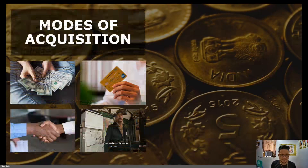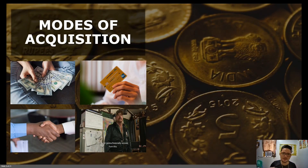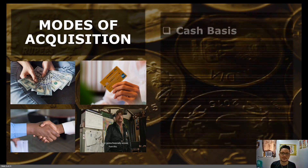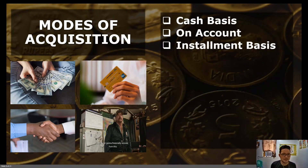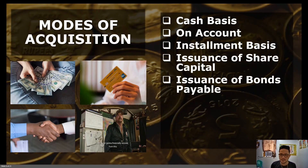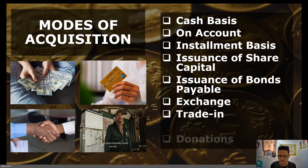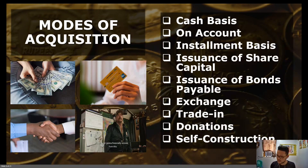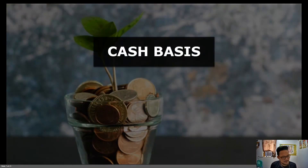Next, the main event of our chapter: the modes of acquisition. What are the means by which we could own an item of PPE? They are: cash basis, on account, installment basis, issuance of share capital, issuance of bonds payable, exchange or trade-ins, donations, and self-construction.